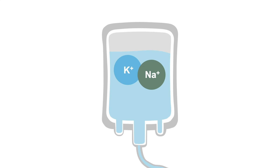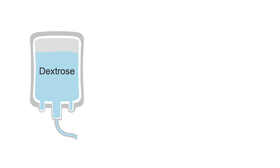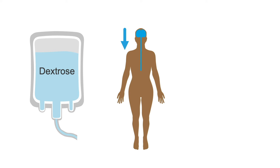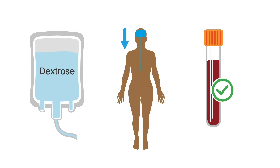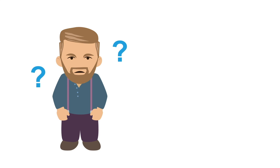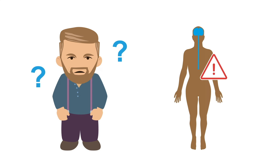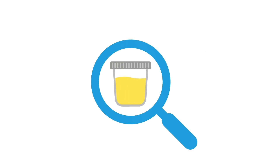When giving intravenous fluids to help replace fluid and electrolytes, and sodium bicarbonate to keep the blood pH elevated, it's important that they contain dextrose. This is because salicylates decrease glucose levels in the central nervous system, despite bloodstream levels usually being normal. This is especially important to remember if the patient is confused or has other signs of central nervous system toxicity. Make sure to monitor the urine output.